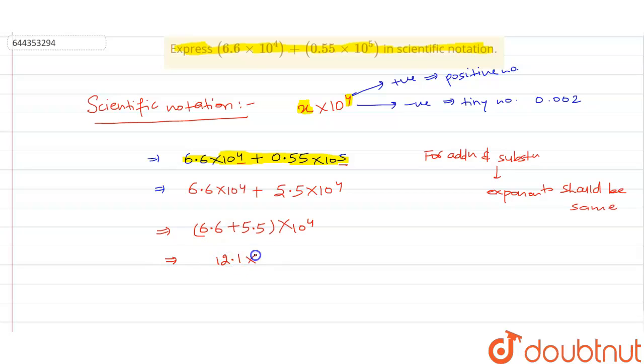But here, important point to be remembered is that 12.1 is not in a single digit. It will be 1.21 times 10 to the power 3 as an answer, because the left number of the decimal must be in a single digit.